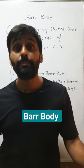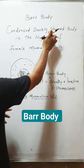What is Barr body? Barr body is a condensed, very compact and darkly stained body that is present in the nucleus of female mammal cells.